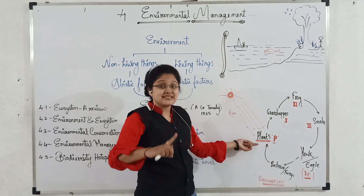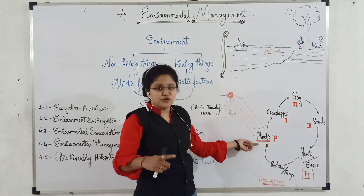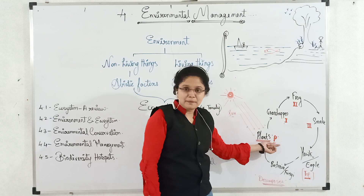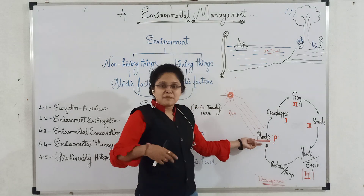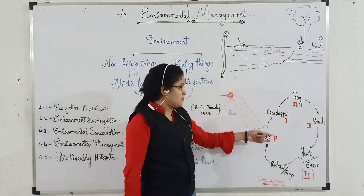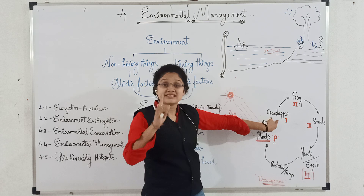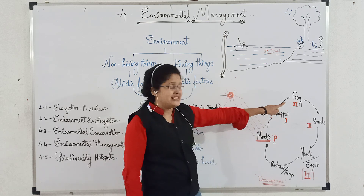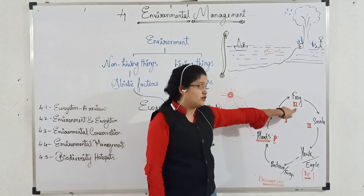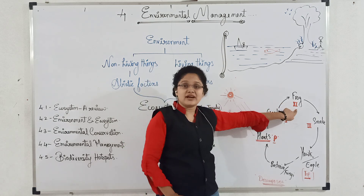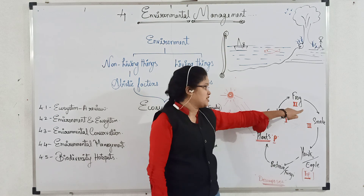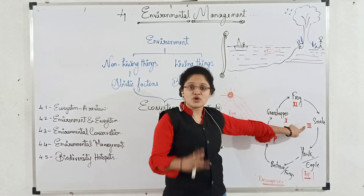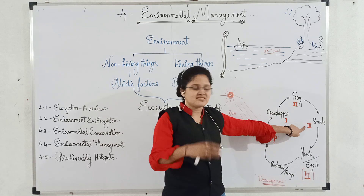Plants produce their own food, hence they are called as producers. These plants are eaten by grasshopper, hence they are called as primary consumers. This grasshopper is eaten by a frog, hence frog is called as secondary consumer. This frog is eaten by a snake, hence it is called as tertiary consumer.